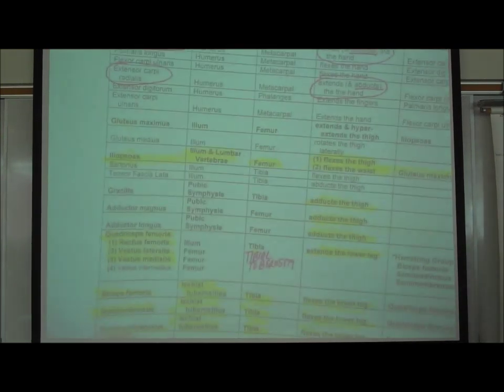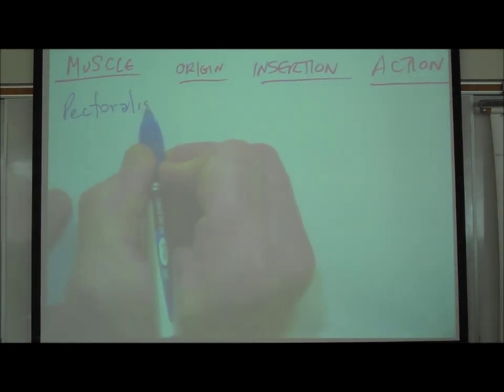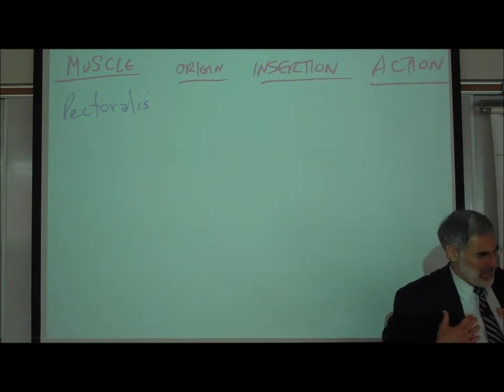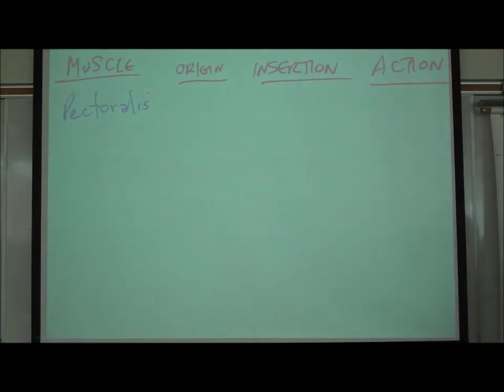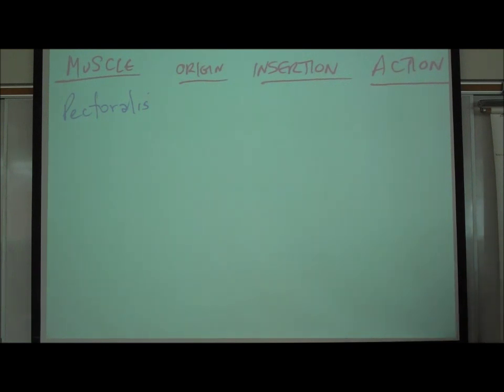Now, there will be one more part to the lab exam. And I'll just tell you about it right now. There will be a completion chart. I can give you, for example, let's say I wrote pectoralis. Alright, so could you write for the pectoralis, the major muscle right here in the chest, its origin, insertion, and action? It originates on the clavicle and sternum. It inserts on the humerus. And one of its major actions, not the only, is it adducts the arms.